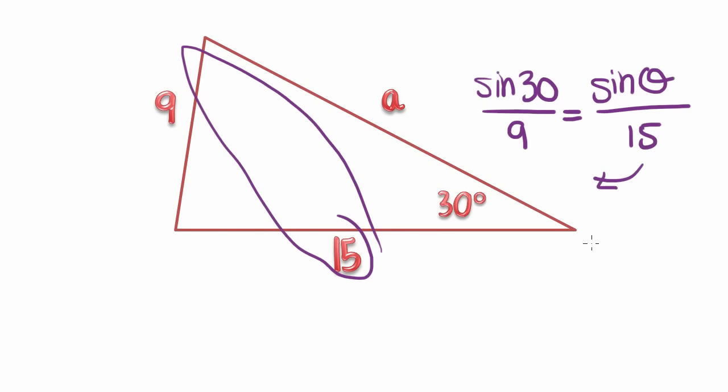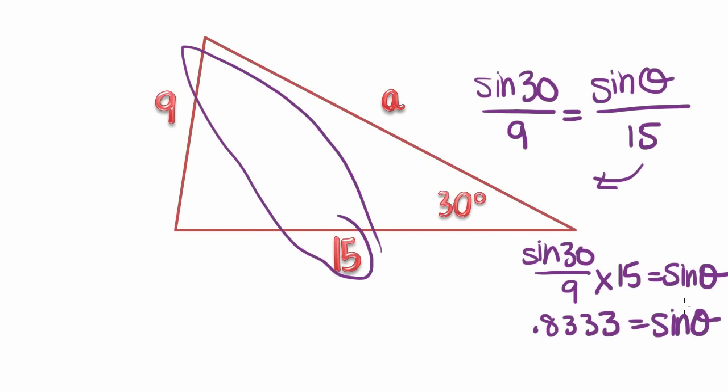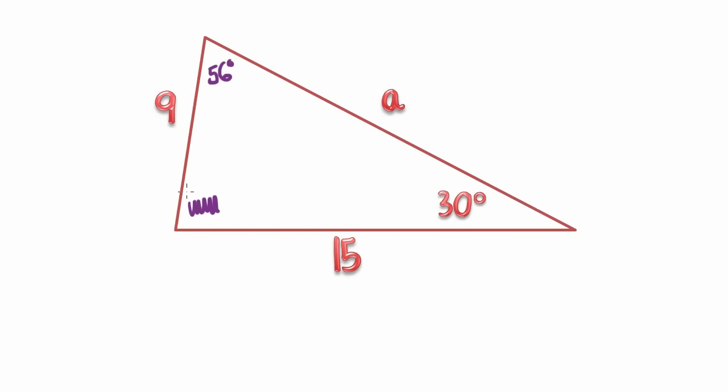So how do we work this out? We times the 15 over to that side to get rid of it. We have sine 30 over 9 times 15 equals sine of theta is 0.8333. Now to get rid of the sine on that operation, to do the inverse operation and get sine over to the other side, we take the inverse sine. So on your calculator, that looks like sine to the negative 1 of 0.8333, which is 56 degrees. Now that I know that, I can work out what this last remaining angle down here must be, because all of the angles in a triangle add up to 180. So if I have 180 minus 30 minus 56, I have whatever is left over as this angle. So that's 94.